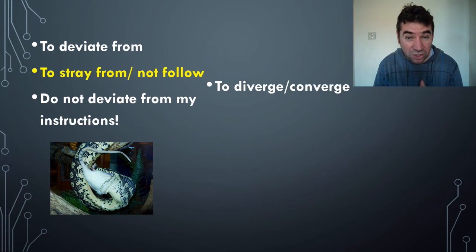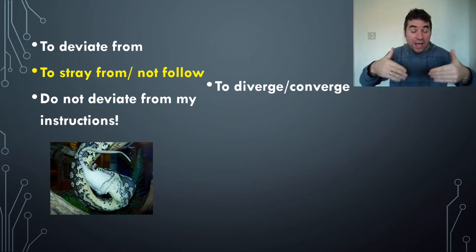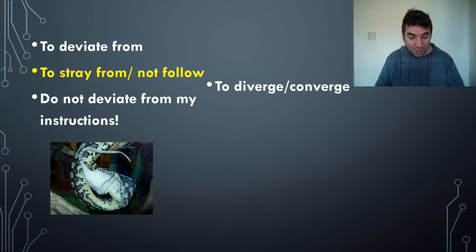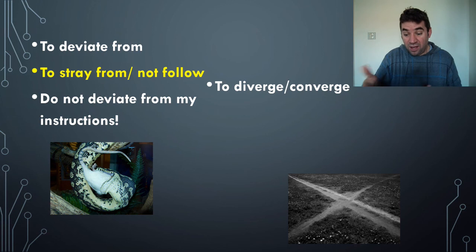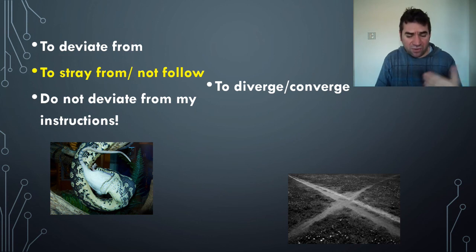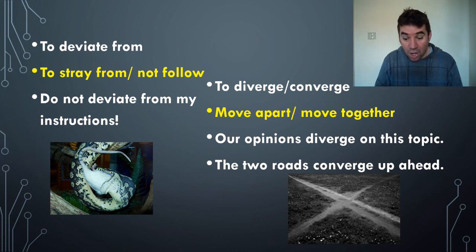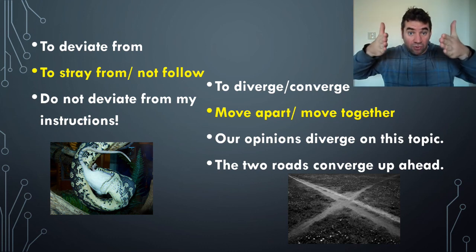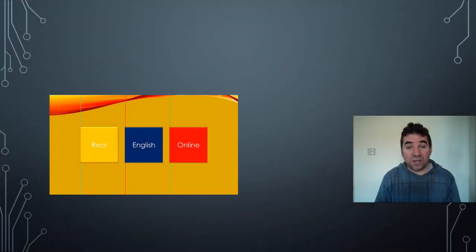To diverge and converge — you'll see these words a lot. If something diverges, it goes apart; converge is the opposite — it comes together. Here you can see a crossroads: all the roads are diverging, or from another perspective, all the roads converge and come together. We also use these metaphorically: 'our opinions diverge on this topic' means we don't agree; 'the two roads converge up ahead' means they become one. That's it for another video — thanks for watching, bye for now!